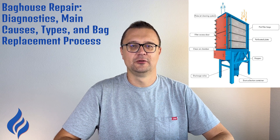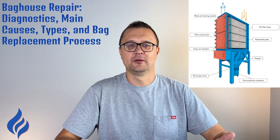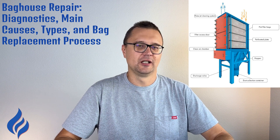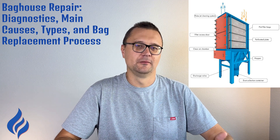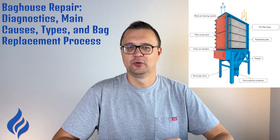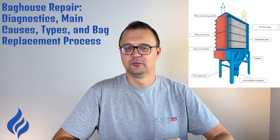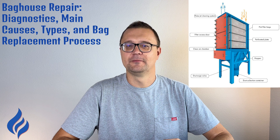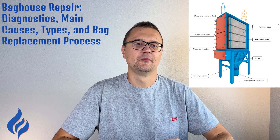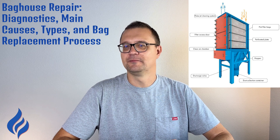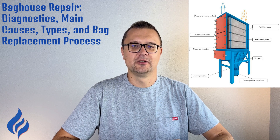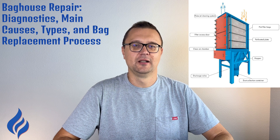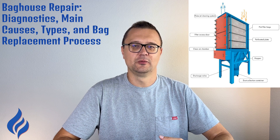Cleaning and Restoration. Dust and residue can build up inside the system over time. Thorough cleaning using vacuums, scrapers, or compressed air can restore your system's efficiency. Be sure to clean internal components like diffusers and ducts to prevent wear on the sleeves. Replacement of Seals and Gaskets. Worn seals and gaskets need to be replaced to maintain system tightness. Leaky seals can lead to contaminated air escaping and reduced system performance.